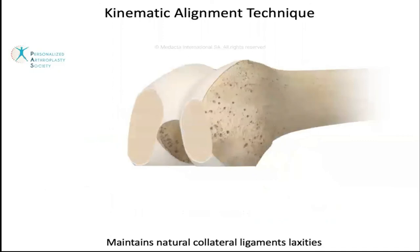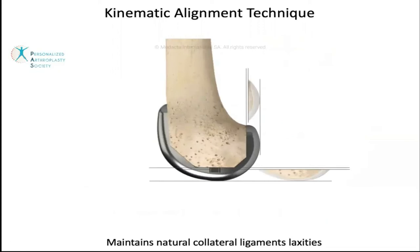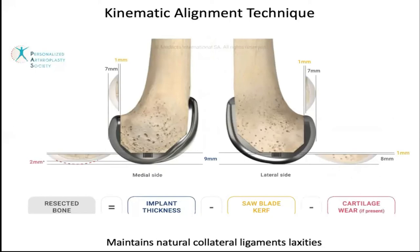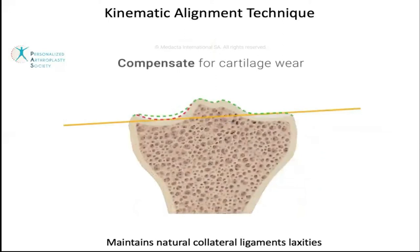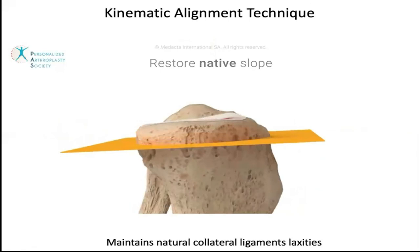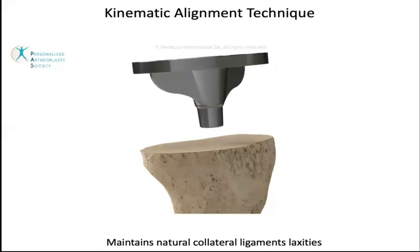Once the femoral preparation is completed and the implant is positioned on the bone, the native femoral articular surface is restored. Every step can be verified by measuring the resected bone. On the unworn side, this equals the implant thickness minus one millimeter of the saw blade kerf. On the worn side, another two millimeters of missing cartilage should be considered and subtracted. The same technique is applied to the tibia. Cartilage wear is compensated on the worn side to align the component to the native joint line. An asymmetric cut is performed on the medial-lateral side, restoring the native slope and cutting exactly the implant thickness. Once the tibial component is in place, the native tibial articular surface is restored.